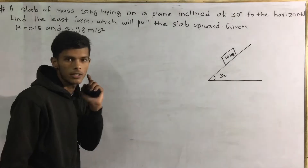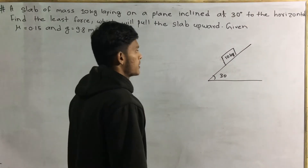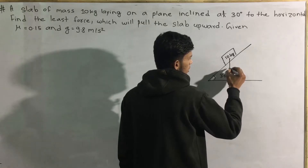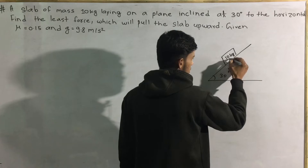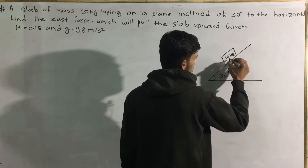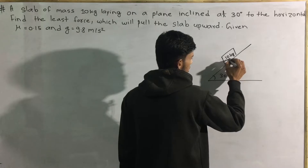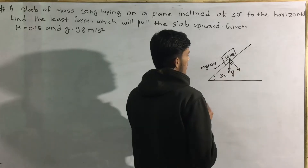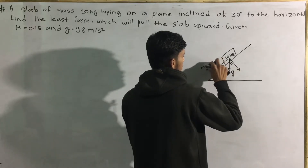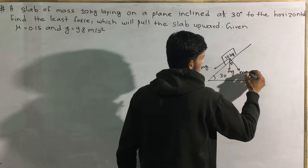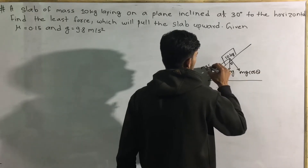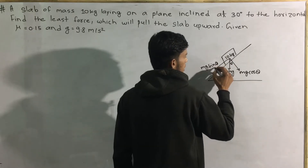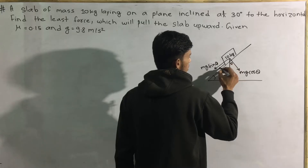And gravity is 9 meters per second squared. Now let me draw this body like this: mg, and this is theta. The components are: cos theta and sin theta, giving us mg cos theta and mg sin theta.